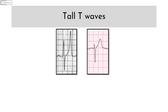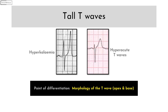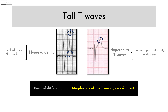The two important DDs for tall T waves are hyperkalemia and hyperacute T waves of ischemia. The point of differentiation is the morphology of the T wave — look at the apex as well as the base. If the T wave has a peaked or pointy apex and a narrow base, consider hyperkalemia. If the T wave has a relatively blunt apex and a wide base, consider hyperacute T waves of ischemia.